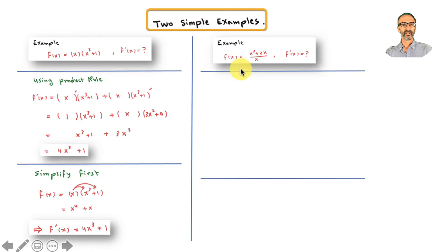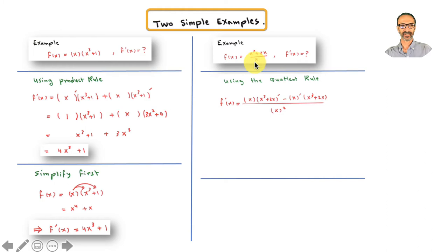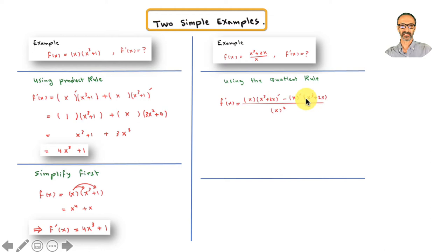Quotient rule example: x cubed plus 2x over x. Using the quotient rule, x is my g (denominator) and x cubed plus 2x is my f (numerator). In the formula: g squared on the bottom, g as-is on top — that's g with no prime — so f gets the prime. Then minus, and this time g gets the prime. Alternate who takes the prime — one takes it, then the other one takes it.